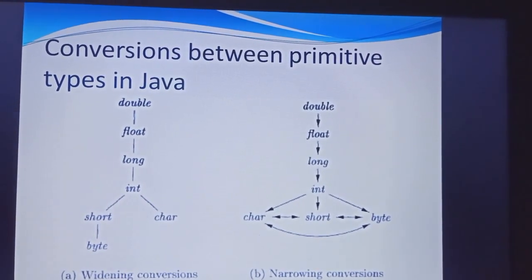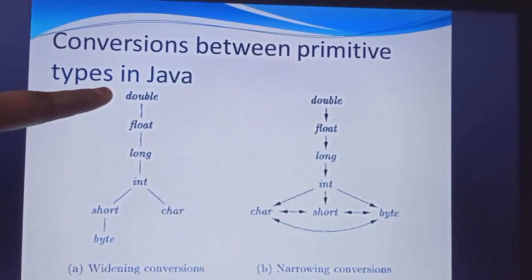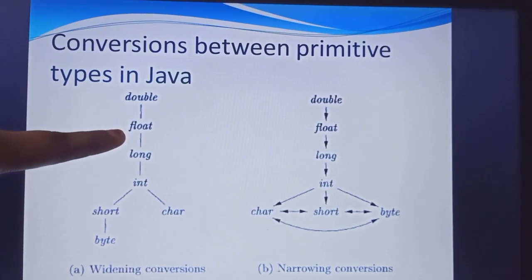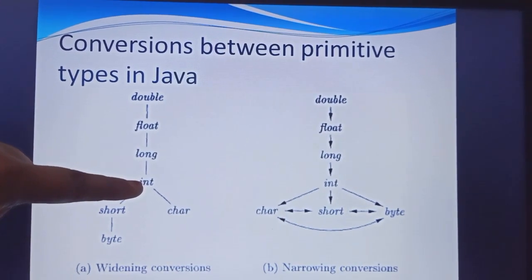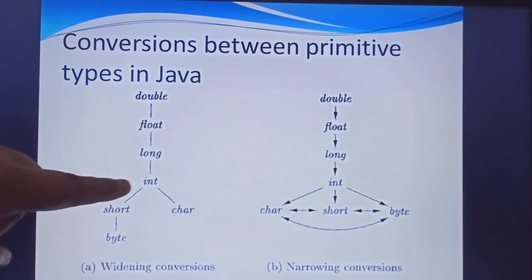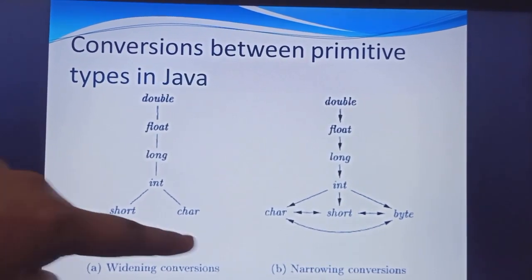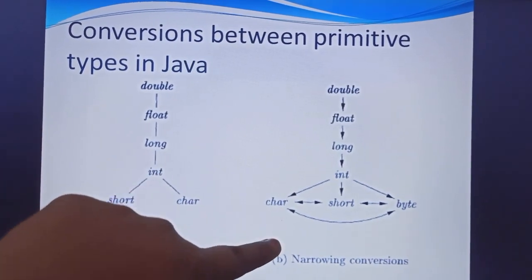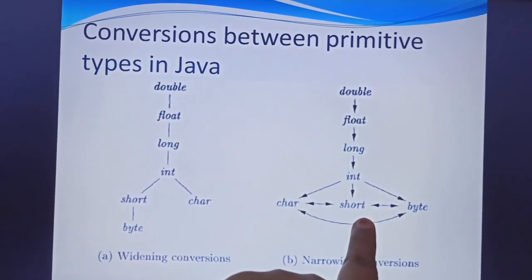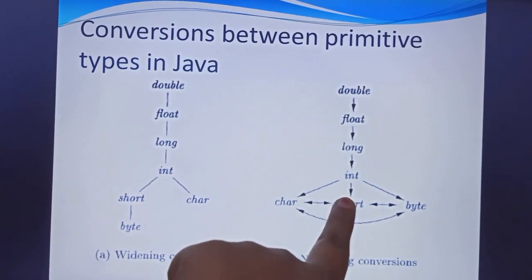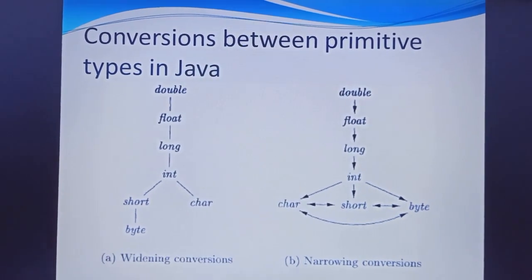Next is the conversion between primitive types in Java. If we take a double value, it will be the float value. That float value may also be a long value. If it is long, then we take the integer value. In the integer we may take the short value or character value. Short value will be the byte value. These are the widening conversions. For narrowing conversions, we may convert character to short, short to byte, byte to short, short to character, or byte to character.